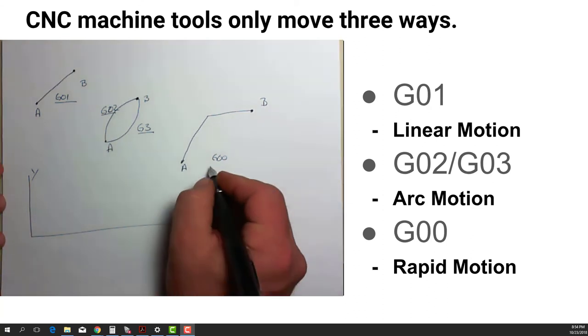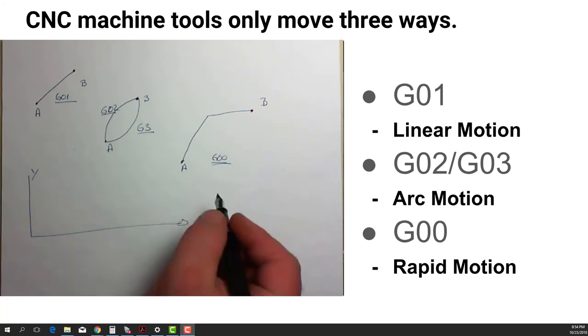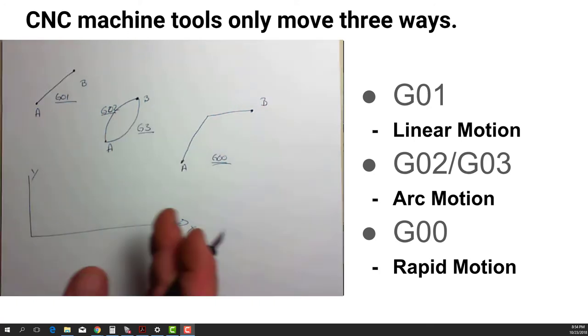When we do a G00 command, we almost always expect that we are not in contact with the workpiece material. This is just to move as quickly as possible from the beginning of one cut to the beginning of the next, or from the end of one cut to the beginning of the next cut, or from the tool change location to the beginning of the cut, or from the end of the cut back to the tool change location.